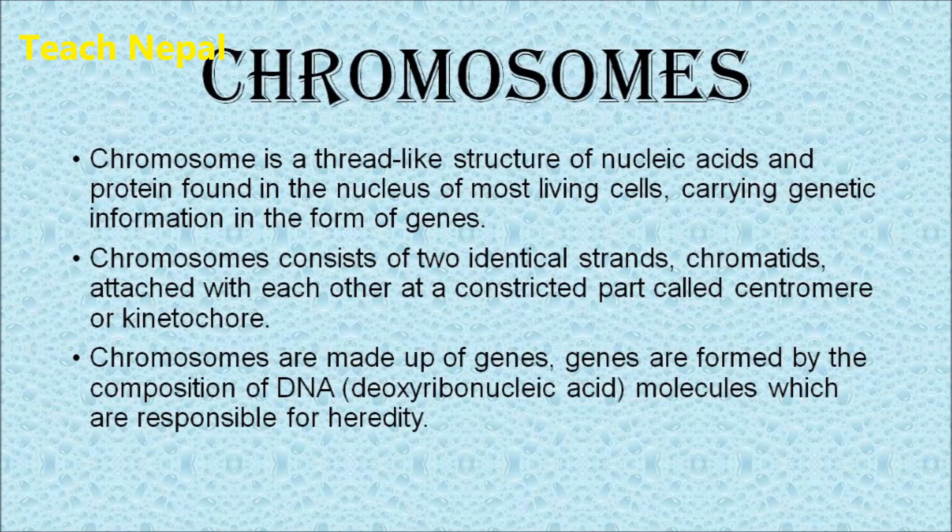Chromosomes consist of two identical strands, as you can see in the figure. These strands are called chromatids and they are connected at a region called the centromere or kinetochore. Chromosomes are made up of small units called genes, which are found in DNA and are responsible for heredity.